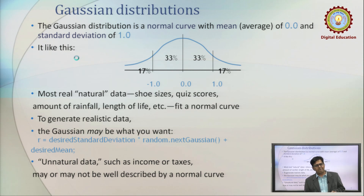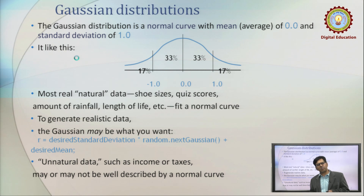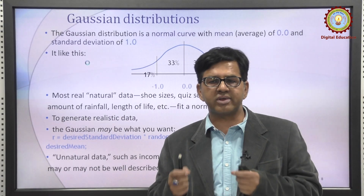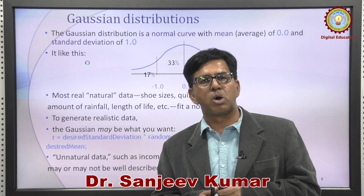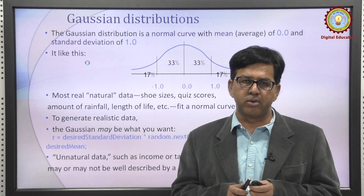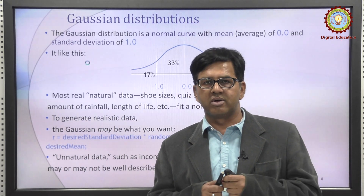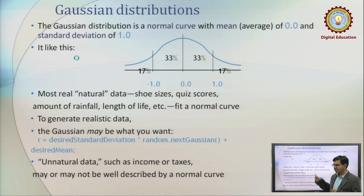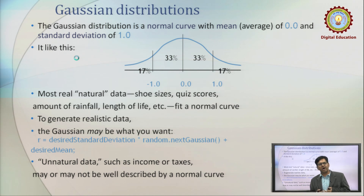The intention of discussing these two mechanisms — linear congruential method and Gaussian distribution — is that for randomized algorithms, we need some random sequence of numbers. For example, if in some algorithm we want to model the waiting time of a customer at any place as a random number, and we use that waiting time to solve some problem, we need to generate random numbers. There are many more probability distributions available in mathematical sciences that model different kinds of random activities.